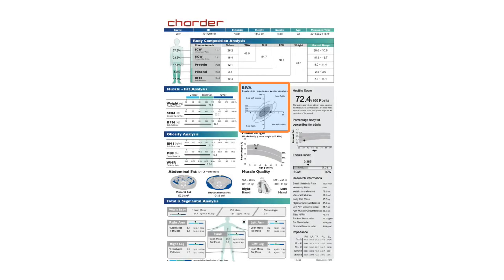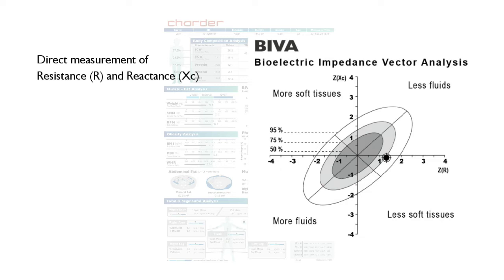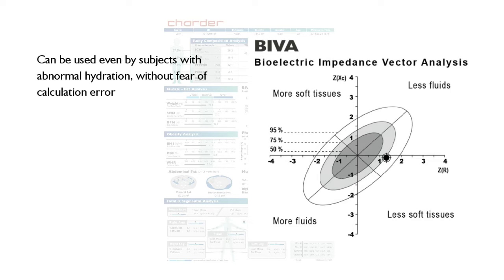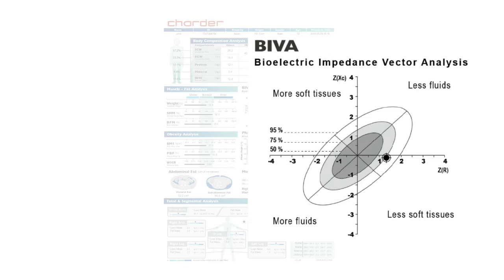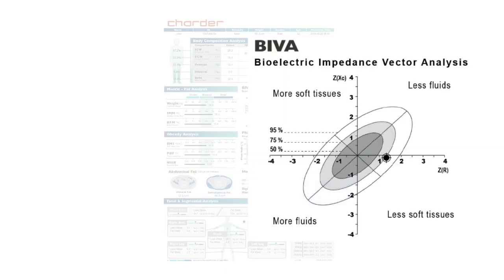Bioelectrical Impedance Vector Analysis, or BIVA for short, is of particular importance for patients with abnormal hydration. Typical BIA relies on standard body water proportions for calculation, but for subjects with abnormal body water — such as dialysis patients — measurement errors in predictive equations are much more common. Because BIVA uses direct measurements of reactance and resistance to evaluate hydration and cellular status, medical practitioners can conduct preliminary screening and track changes in body water, even for individuals with abnormal hydration, increasing BIA reliability in clinical use. It can also help evaluate health at a cellular level — malnutrition is possible even for obese subjects, but can be difficult to determine using traditional outputs such as muscle and fat mass. BIVA makes it possible to evaluate subjects regardless of body type.